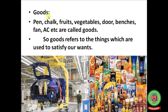First one is goods. Students, see your surroundings — a number of goods are there like pen, chalk, fruits, vegetables, door, benches, fan, AC, tube light, activa, car, grills, books. So all these things are known as goods. Goods refers to the things which are used to satisfy our wants.